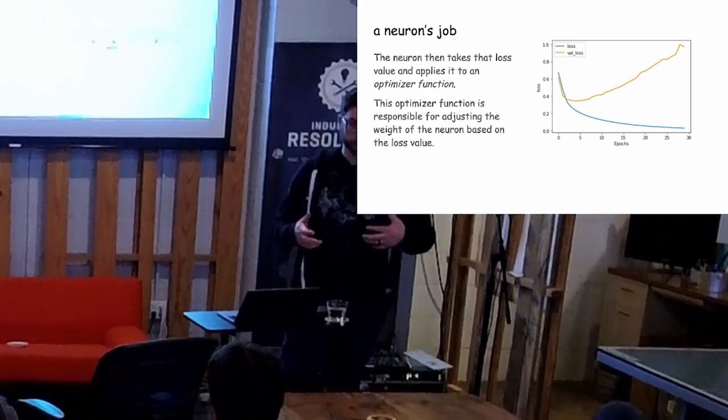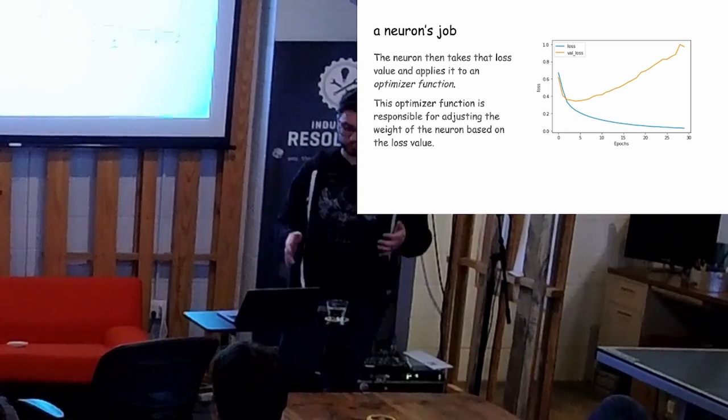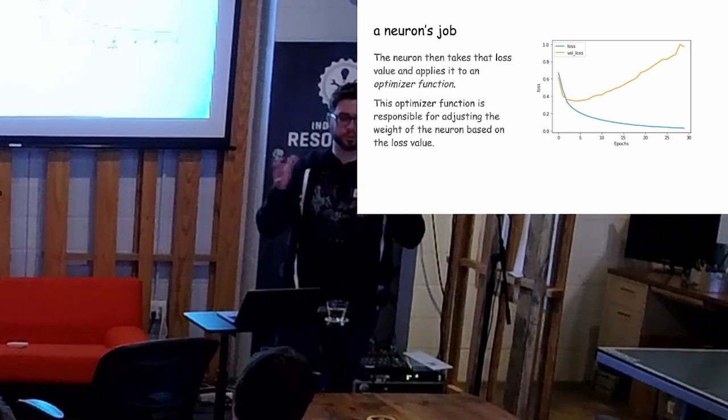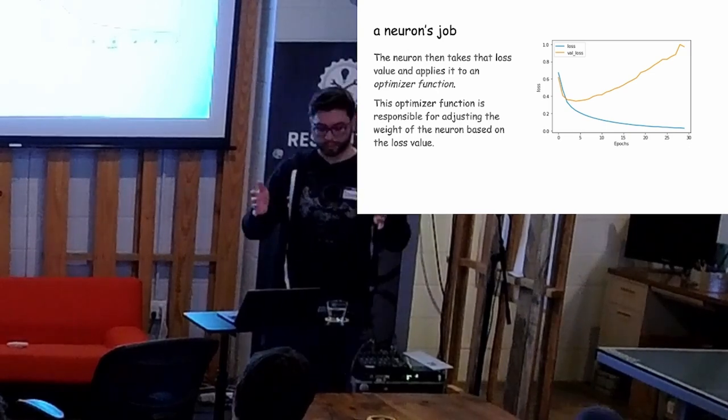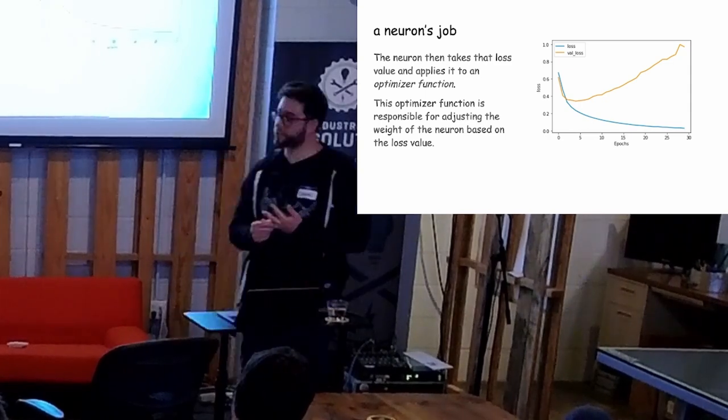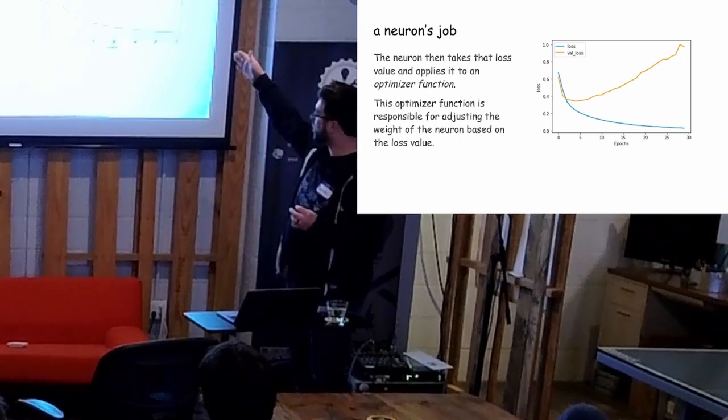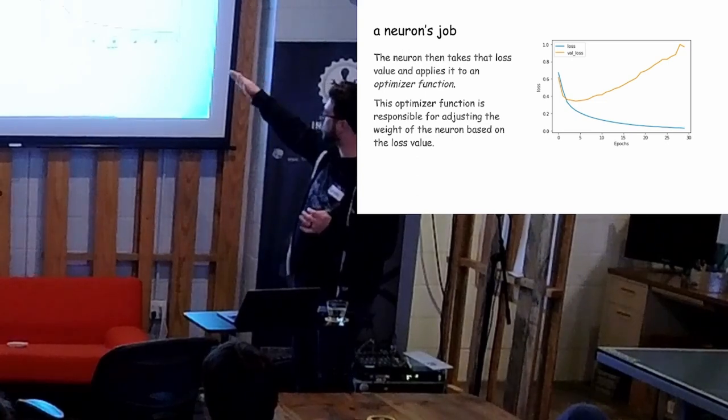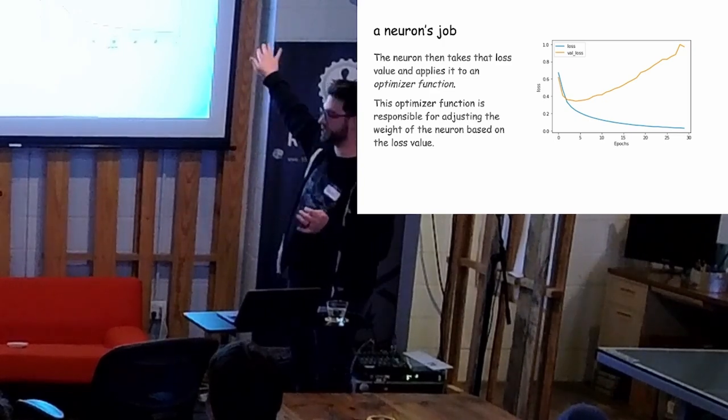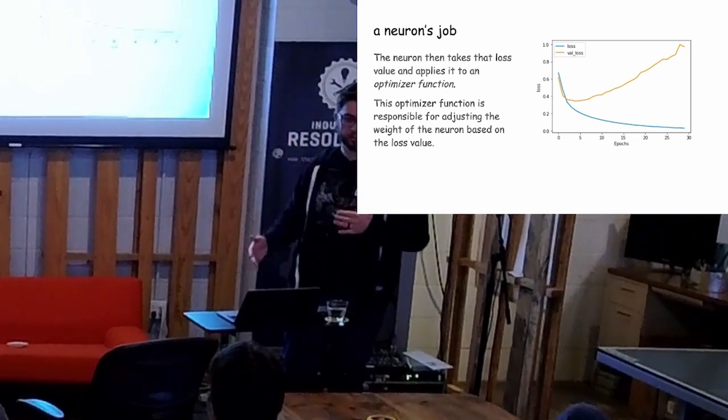And then these labels just at the top are like the different jobs and whatnot that the neurons can provide or do. It takes that loss value and it applies it to an optimizer function. And this is what does the actual math of how do we get closer to it. It's responsible for adjusting the weight of the neuron in that function to lower the loss value. So you actually see this graph on the right is measuring the loss value. The blue line is the loss, so as it goes on, it'll actually decrease and at some point start to flatten out. And then the orange line is the value loss, so the value that it's using to kind of adjust that loss value, right?